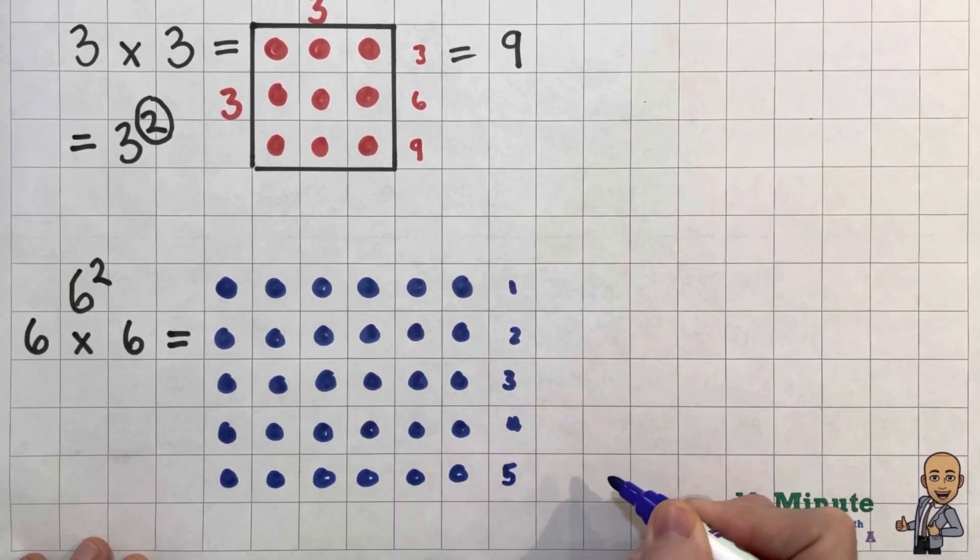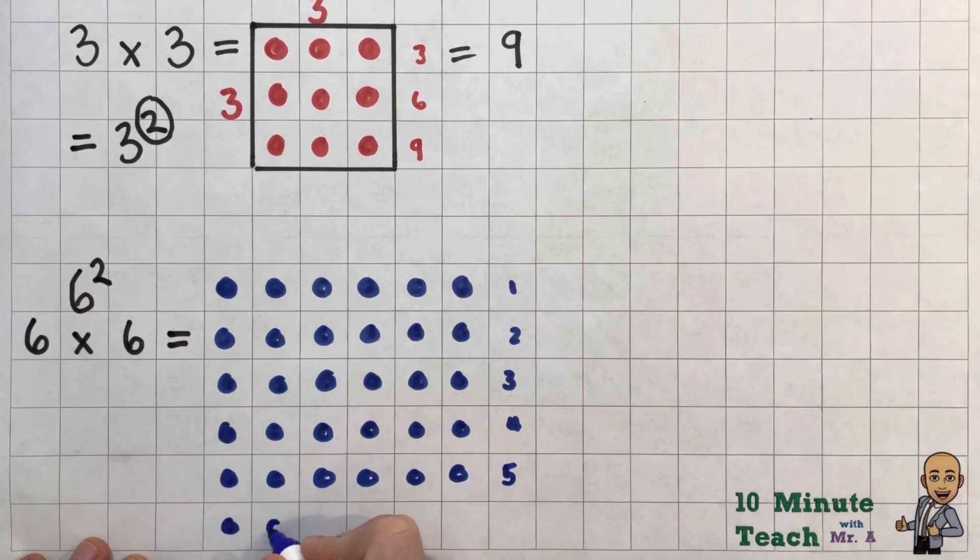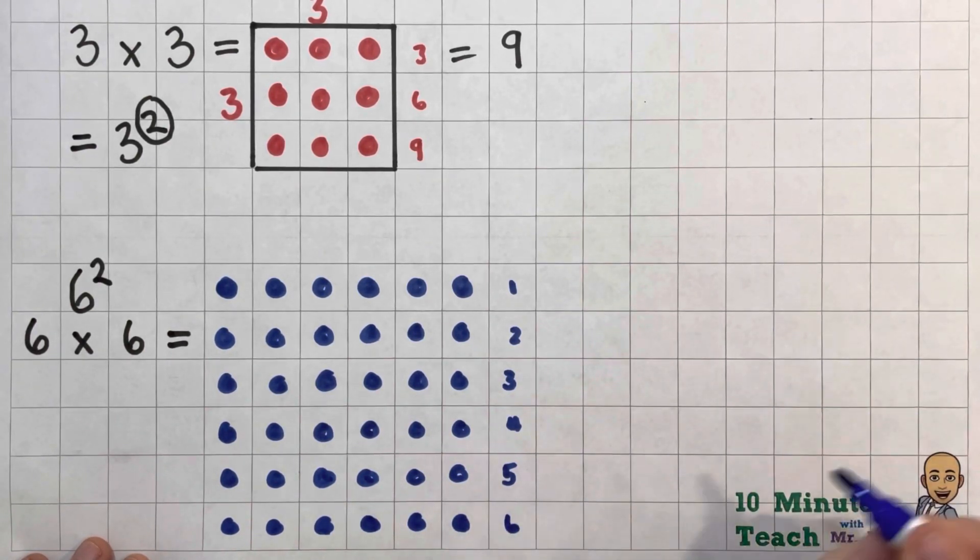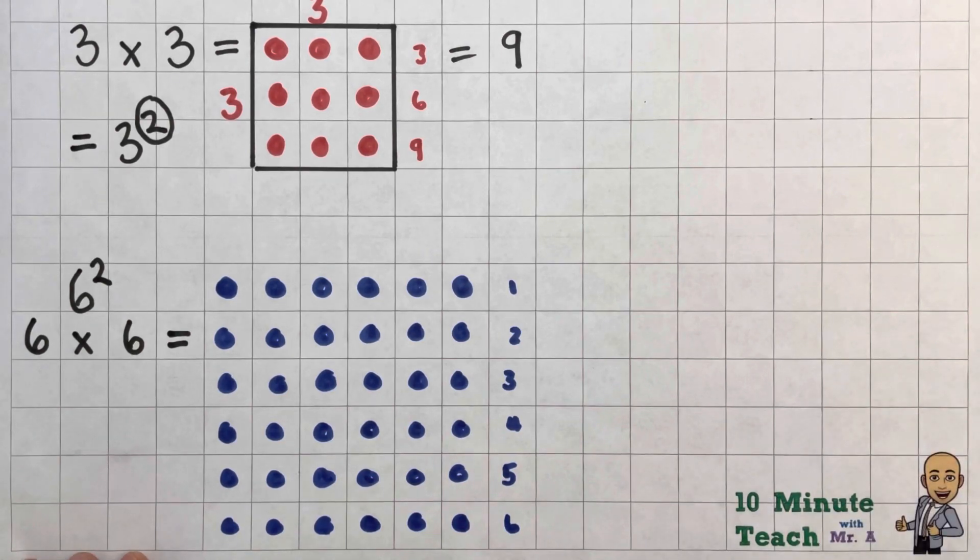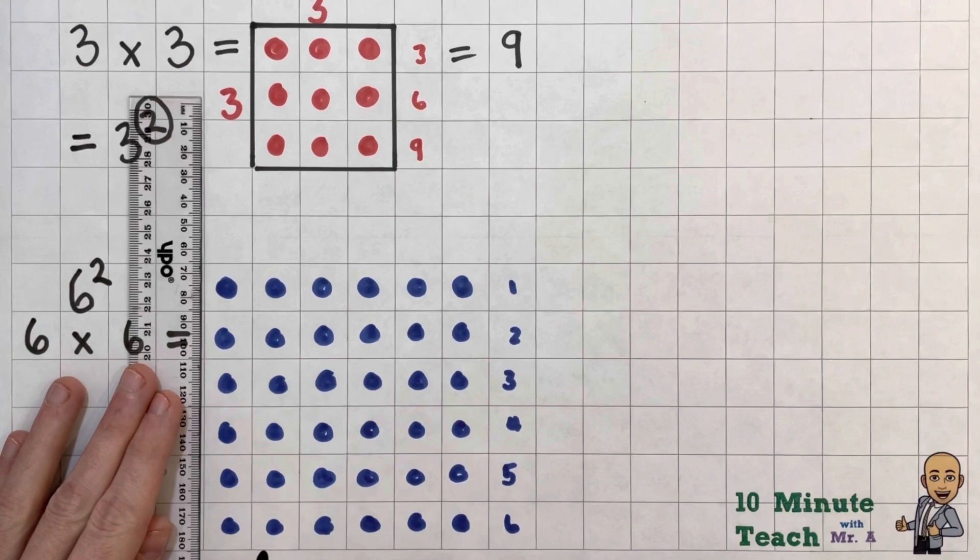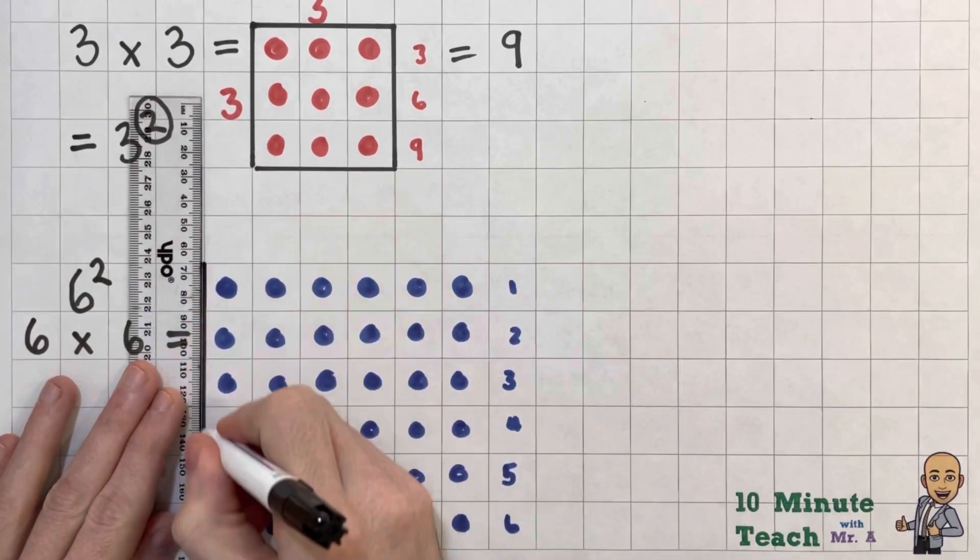And here we go with our final one. And what you see start to happen is that we actually begin to form a square. So there's my 6 lots of 6. So let's draw in our square just to make it really, really, really clear.